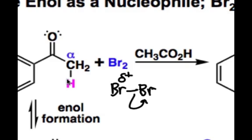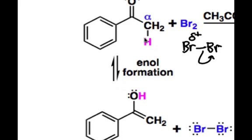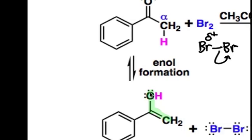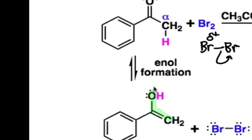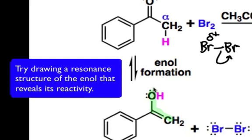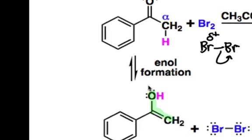Under acidic conditions, a ketone present in the reaction mixture can isomerize to the nucleophilic enol form, and this enol form can add to the electrophilic bromine in an AE-type step.